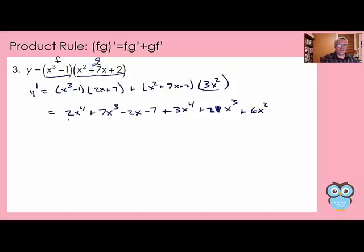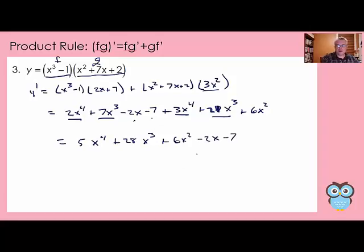Then we combine like terms. The two x to the fourth terms give 5x to the fourth. 7x cubed plus 21x cubed is 28x cubed. Then we have 6x squared, minus 2x, and minus 7. That's the product rule and that's the derivative.